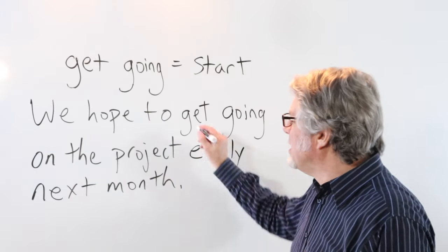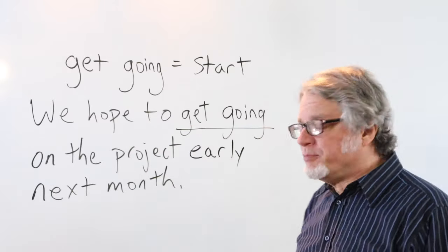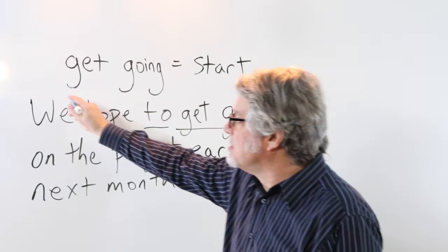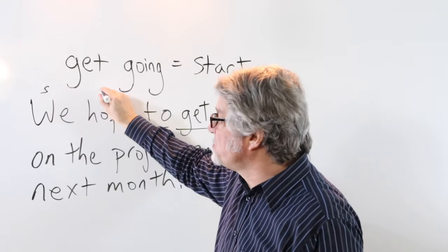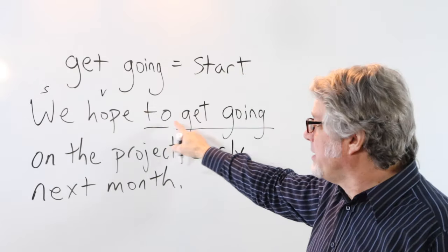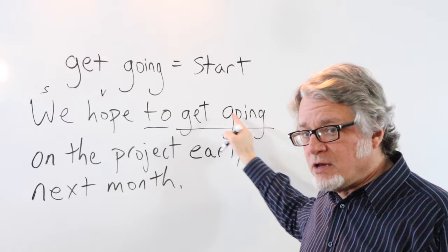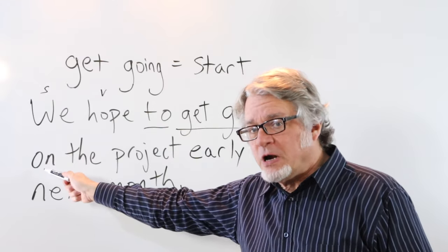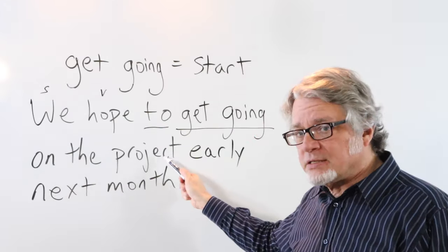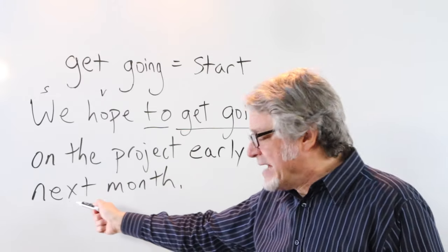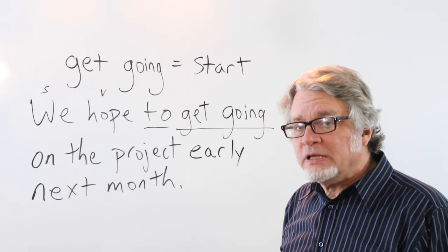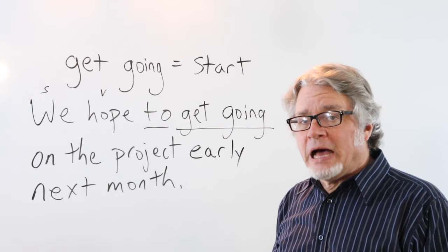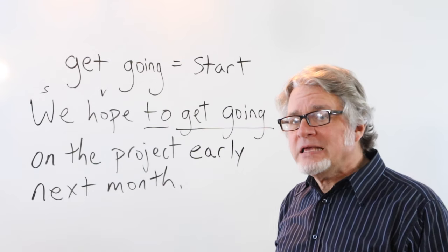We hope to get going on the project early next month. Here's the subject. This is the verb. Here's an infinitive to get going. This is a prepositional phrase on the project. And then here's a time expression: early next month.